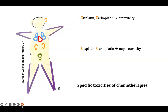The V-shaped limbs — hands and legs — are represented by the letter V. The anti-cancer drug starting with V is Vincristine, which is responsible for peripheral neuropathy. This results from damage to the nerves outside the brain and spinal cord, and often causes weakness, numbness, and pain usually in the hands and feet.